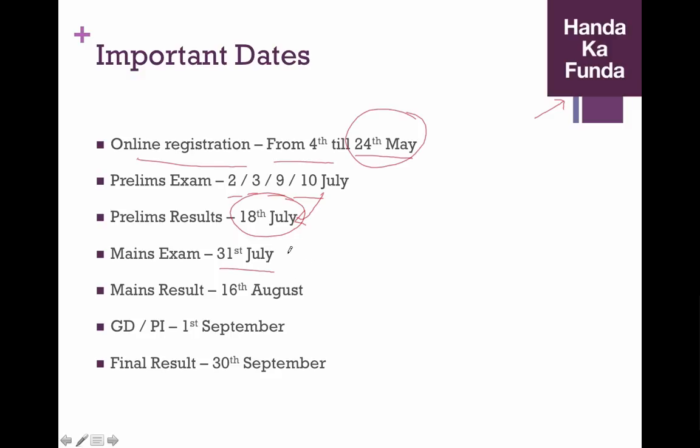The mains exam results will be declared on the 16th of August. Only the people who clear the prelims will be allowed to write the mains. After the results are declared on the 16th, the candidates will need to go for a GD/PI round which will be held on the 1st of September and the final results will be declared on the 30th of September. So these are the important dates as far as SBI PO 2016 exam is concerned.